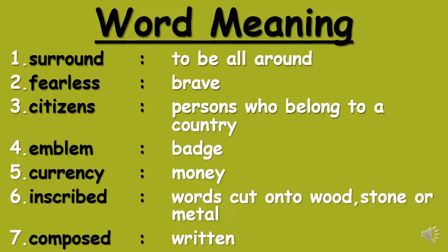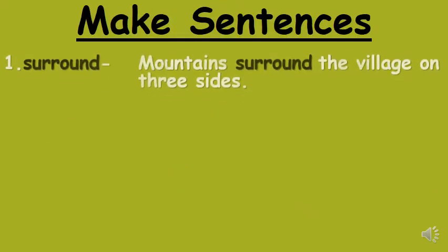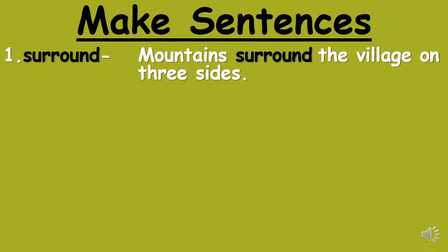Whenever we write keywords or word meaning, we always start the word with a small letter — remember this. Now, make sentences. Our first word is surround: mountains surround the village on three sides, meaning the village is surrounded by mountains from three sides.